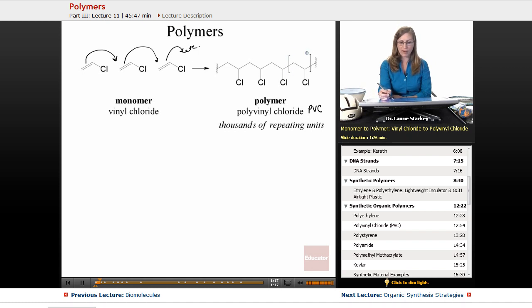Now, notice I put a bracket around here. This is showing the repeating unit. It has a chlorine and two carbons, and a chlorine and two carbons. So, one thing we can do when we look at a polymer is try and identify what the monomer component is, and what is the repeating unit that goes on through the polymer.